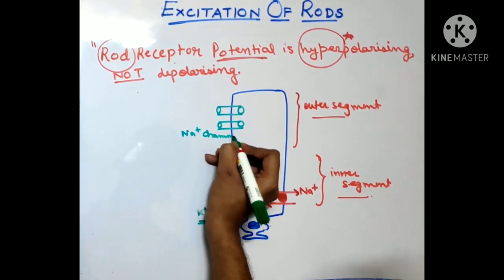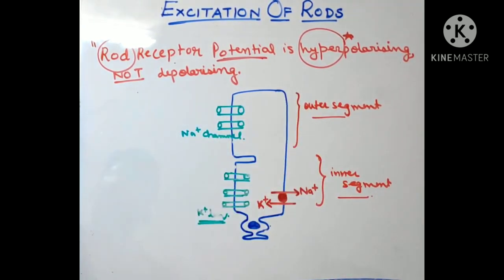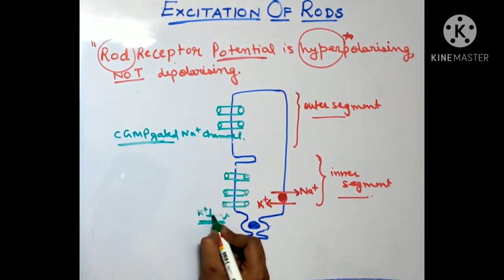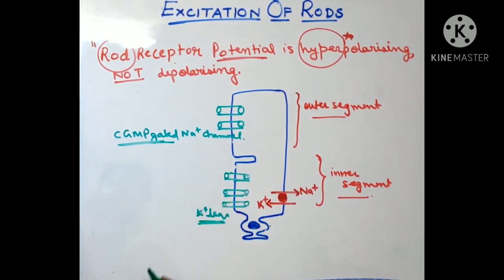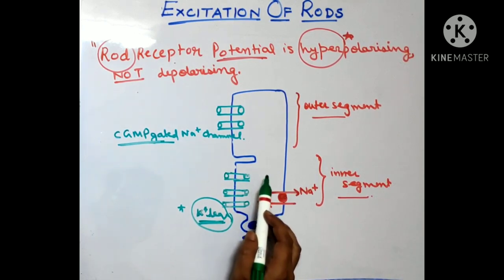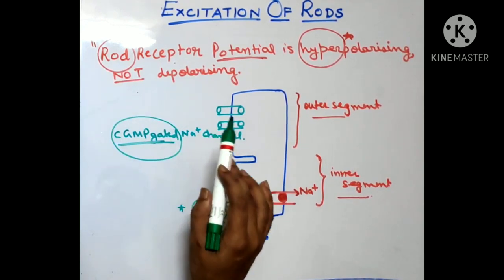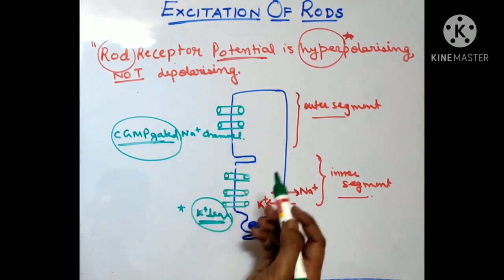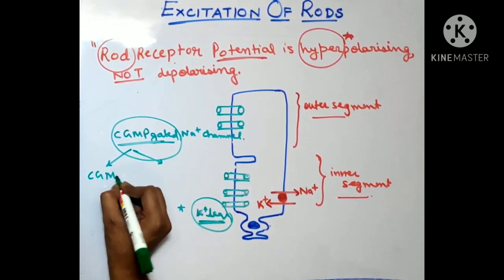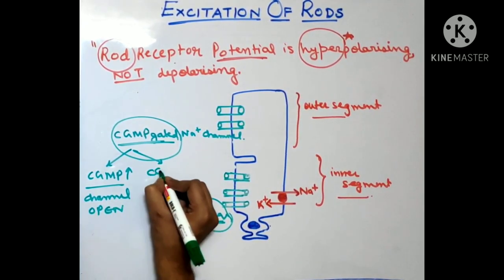These sodium channels in the outer segment are not sodium leaky channels — these are cGMP-gated sodium channels. The potassium leaky channels work all the time, meaning potassium will come out of the cell continuously. But since the sodium channels are cGMP-gated, they will not always work. They work in a particular condition: if cGMP is high, then the channel is open, and if cGMP is low, then the channel will close.